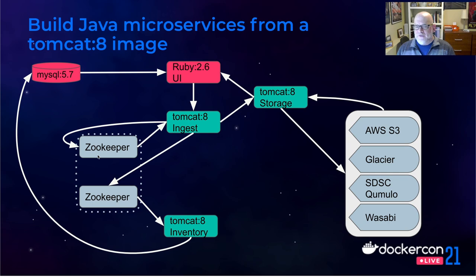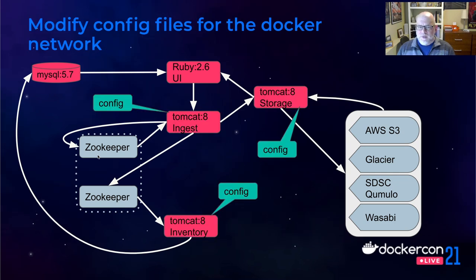For our storage, ingest, and inventory microservices — those are all Java-based Tomcat applications — we built Docker images using a Tomcat 8 Docker image. As I did with the user interface, I overlaid configuration files into those containers to help each of those services find other services purely within the Docker network.